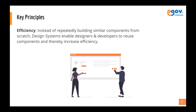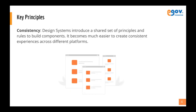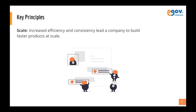A design system has three key principles. The first is efficiency — instead of repeatedly building similar components from scratch, the system enables designers and developers to reuse components and thereby increase efficiency. The second is consistency — a design system introduces a shared set of principles and rules to build components, making it much easier to create a consistent experience across different platforms. The third is scale — if you want to build something at scale, you need a system in place.